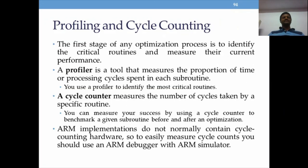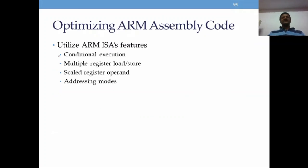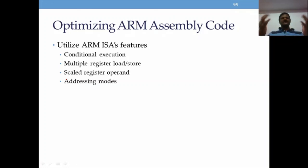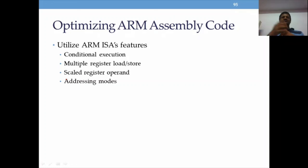Optimization can be done using inbuilt methods such as conditional execution, multiple register load/store, scaled register operands, and different addressing modes. Optimization is not just about code size — you must also consider the pipeline architecture. If the pipeline is completely filled and gets stalled by conditional instructions, all pipe stages must be flushed and reloaded, which is time-consuming. Avoiding such conditions is what optimization aims for. This concludes the second module; the third module will follow.